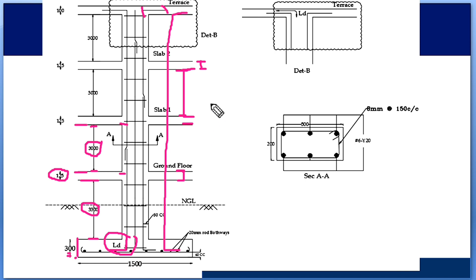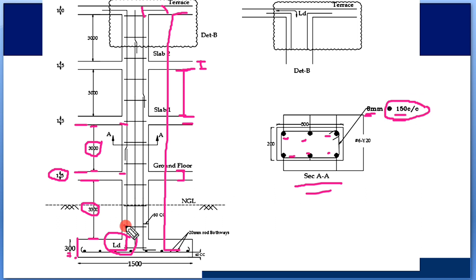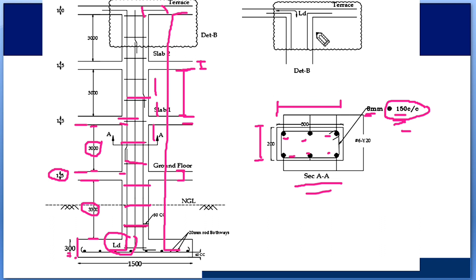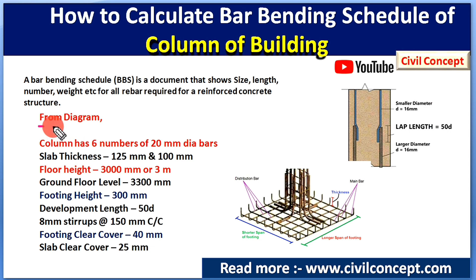The stirrups use 8 mm rebar with 150 mm center-to-center spacing. The width of the stirrups is 200 mm and the length is 500 mm. Six longitudinal bars are used in this column. The zoomed diagram also shows how the development length is provided in the longitudinal rebar at the junction.